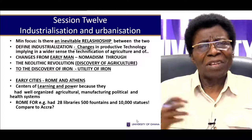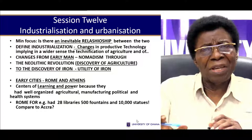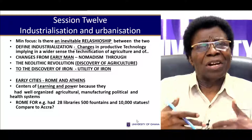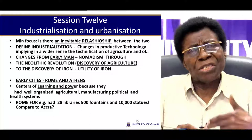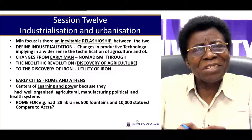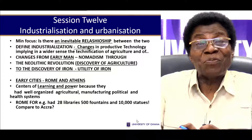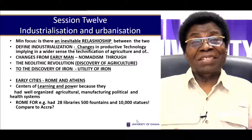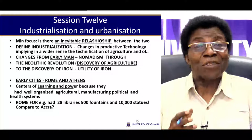When we speak about changes in productive technology, it means that the kind of technology we have today — what we often refer to as state-of-the-art technology — has gone through a process of evolution from earlier times until it became what it is today. For example, the mobile phone, computers, and many other technologies available today are state of the art. But how did it all begin? This is the reason why we speak about changes in productive technology as the definition of industrialization. We can trace the origin from early man.